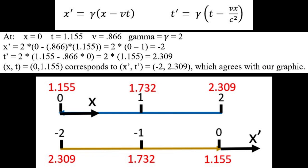So what the Lorentz transformation equations do is get you from the coordinates in one reference frame to the coordinates in the other reference frame. For example, here at x equals zero, t equals 1.155 in the unprime frame, and the velocity of the other frame is positive 0.866 because that's the direction the unprime frame sees the prime frame as going in its plus direction. And the gamma is two, so plugging into these two equations at the top, x prime equals minus two and t prime equals 2.309, which corresponds with the picture in our graphic.